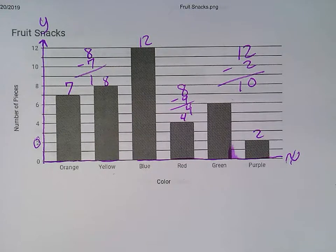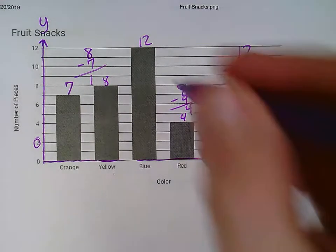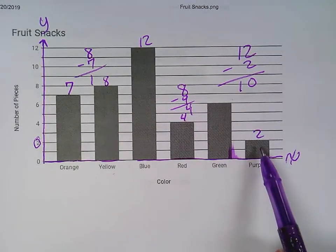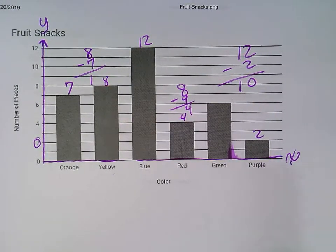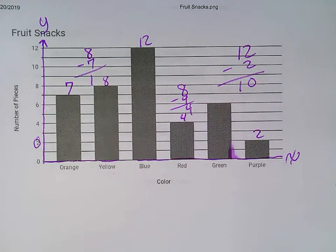Now, also you need to know words like most or greatest or least or smallest. Most deals with the largest. Greatest deals with the largest. Least deals with the smallest. Smallest also deals with the lowest number. So you need to make sure that you know those words.